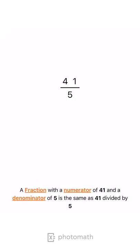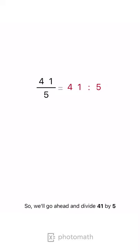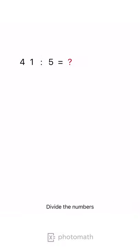A fraction with a numerator of 41 and a denominator of 5 is the same as 41 divided by 5. So, we'll go ahead and divide 41 by 5. Divide the numbers.